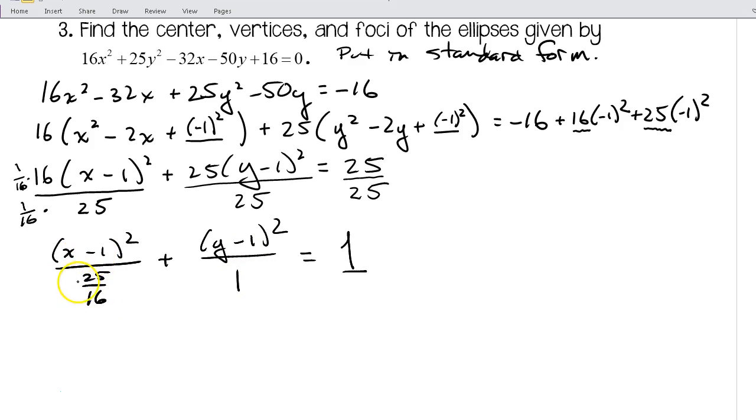So we're looking for the larger denominator. 25/16 is larger than 1, so I know that this is going to be horizontal. And I know that a² is 25/16, so that means that a is equal to 5/4. And I know that b² is equal to 1, so that means that b is equal to 1.